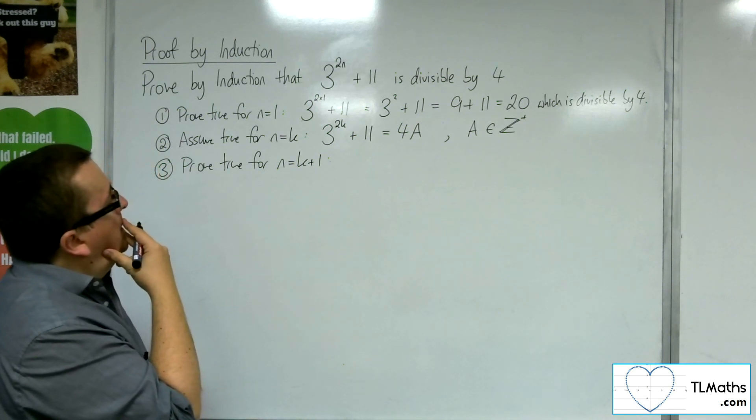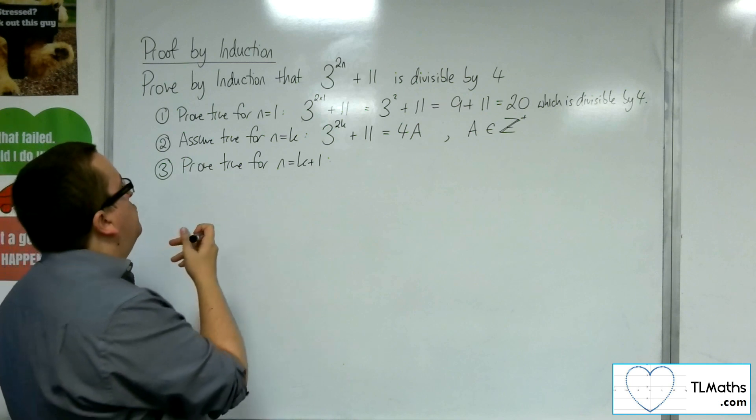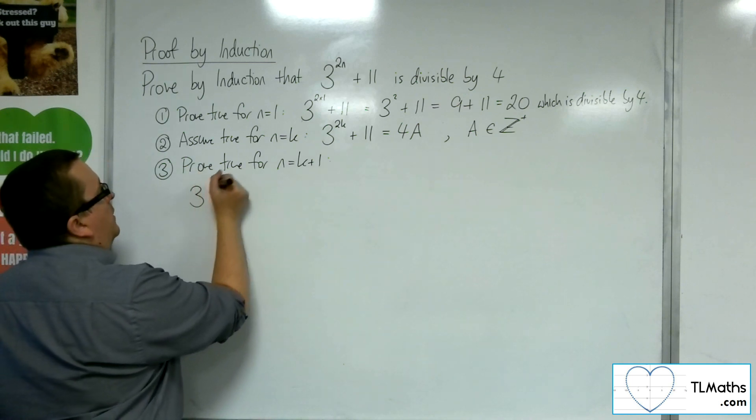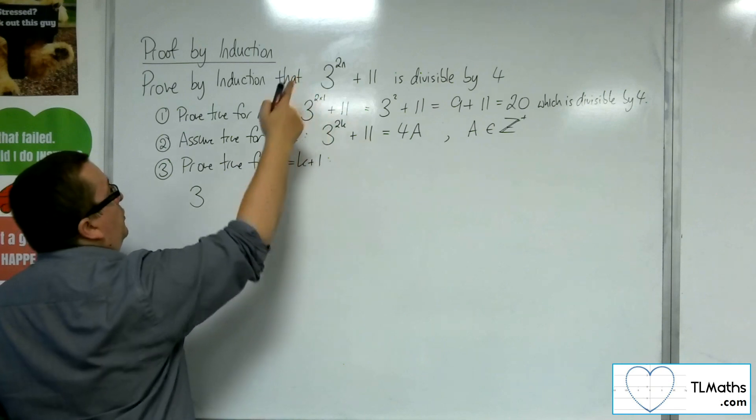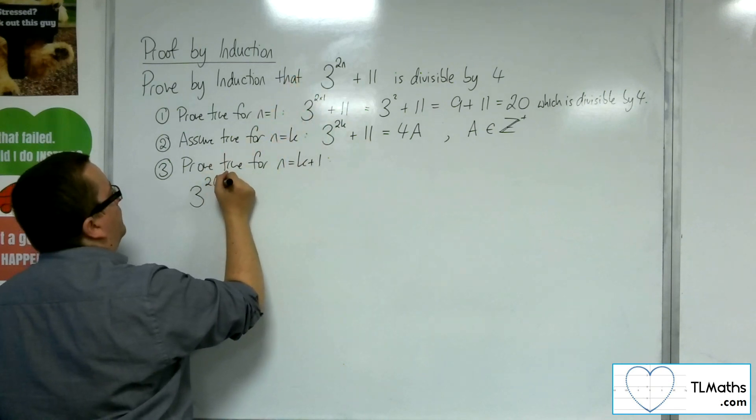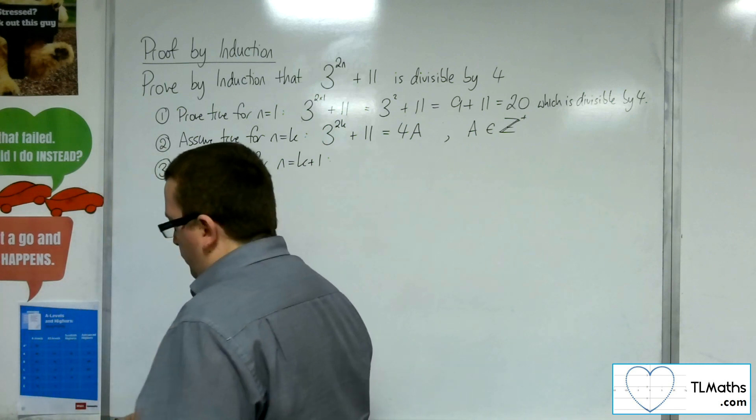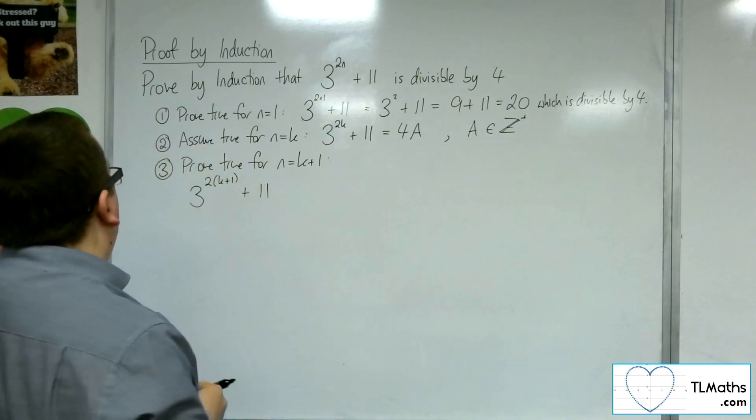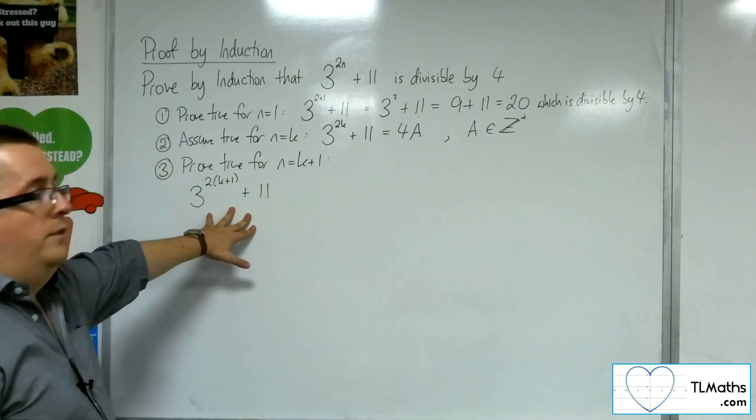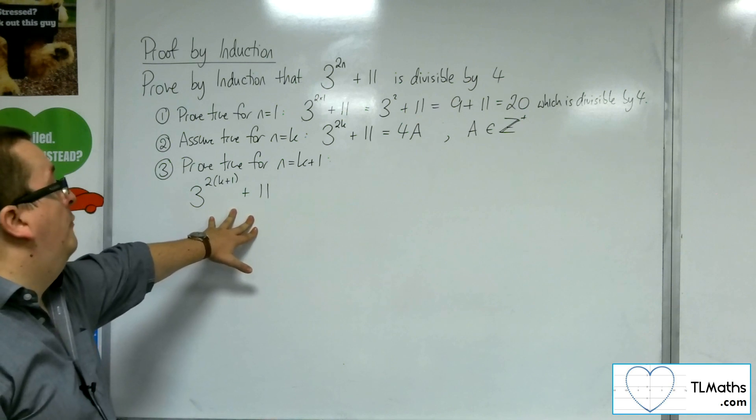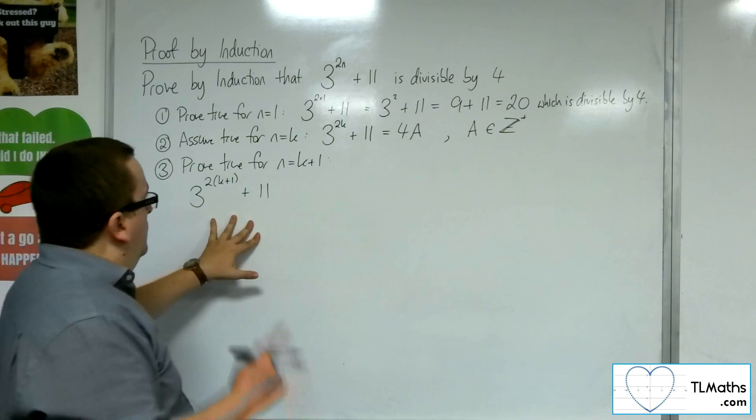So let's write it in. So that would be 3 to the 2 lots of k plus 1 plus 11, and we want to show that that's divisible by 4.